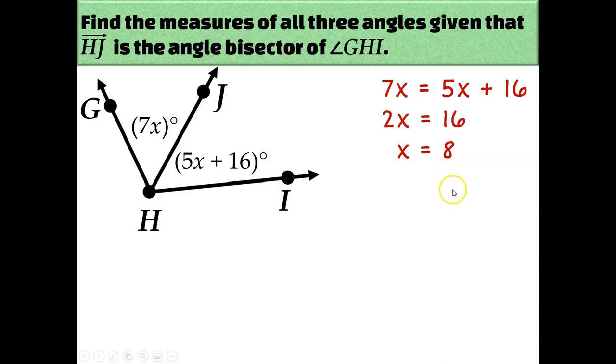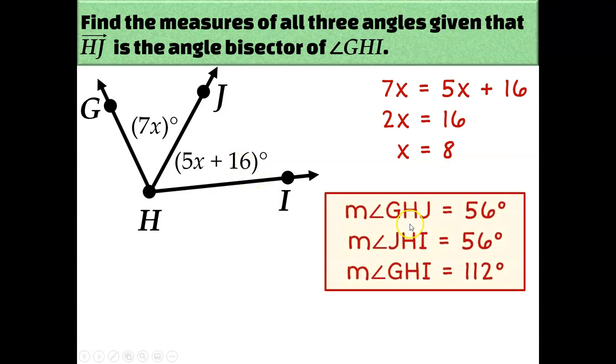So to figure out the three missing angle measures, I'm going to need to plug 8 into x here and here. 7 times 8 would be 56. 5 times 8 is 40 plus 16 is also 56. And the measure of angle GHI, the entire angle, can be calculated by adding those two 56 degree angle measures together, which means angle GHI is 112 degrees.